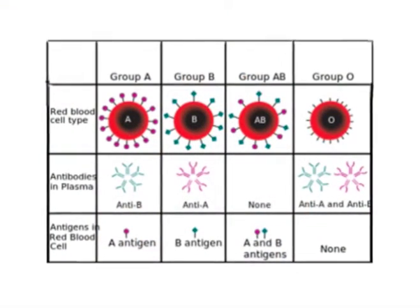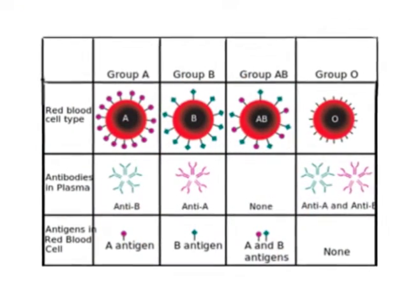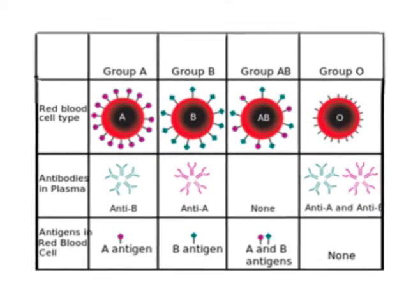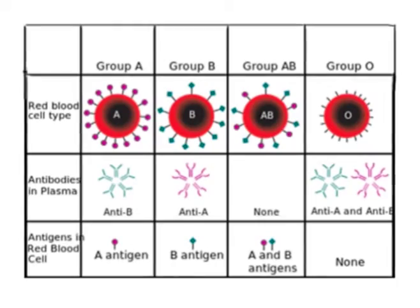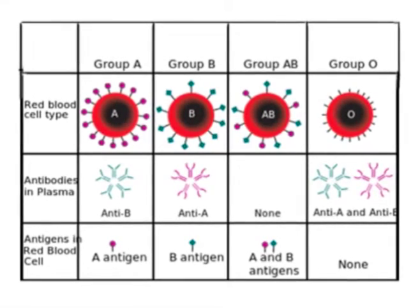There are two antigens and two antibodies that are mostly responsible for the ABO types. The specific combination of these four components determines an individual's type. The presence of either A antigen or B antigen designates the A blood group and B blood group respectively. On the other hand, when both antigens are present, it is termed the AB blood group, while the absence of both antigens is known as the O blood group. Therefore, for the ABO blood group system, there are two antigens — A and B — along with two antibodies — anti-A and anti-B.